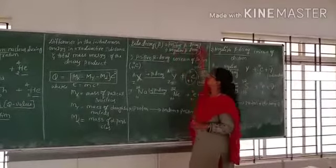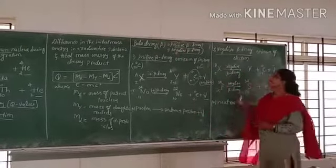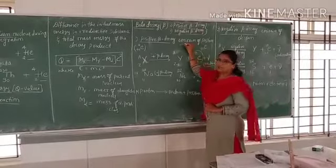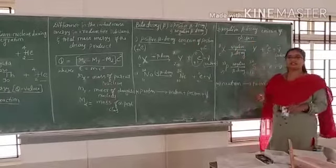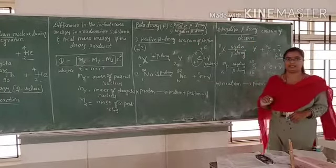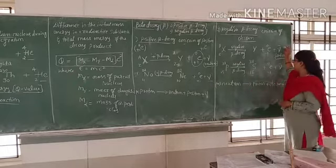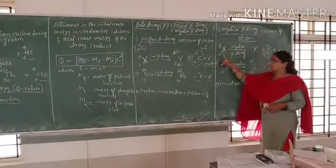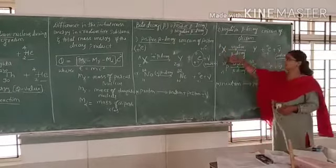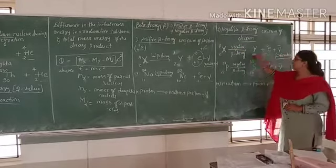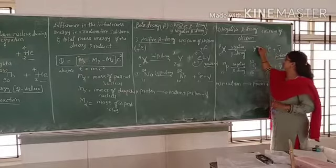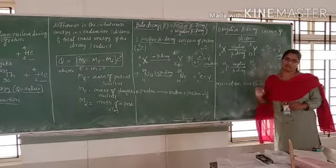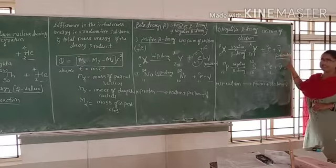The second type is negative beta decay. Negative beta decay is a process of emission of an electron. Here the electron is released along with the emission of an anti-neutrino. X represents the parent nucleus with atomic number Z and mass number A. When this parent nucleus undergoes negative beta decay, the daughter nucleus is obtained. The atomic number is increased by 1, but mass remains constant, along with the emission of an electron and anti-neutrino.